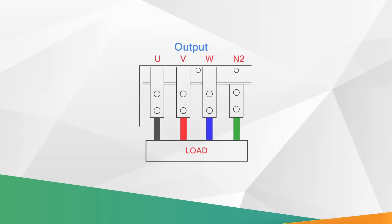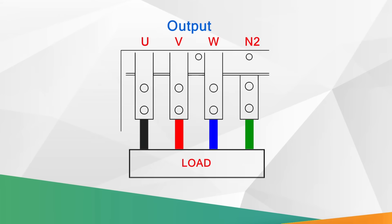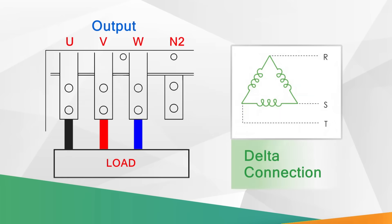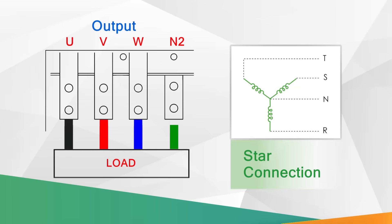There are single-phase and three-phase electric power systems in the world. As you can see on the screen, there are two types of three-phase systems: a delta connection which consists of three-phase and three wires, and a star connection which consists of three-phase and four wires.